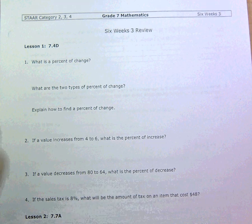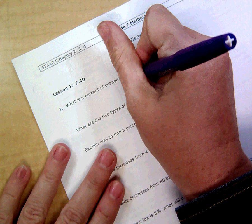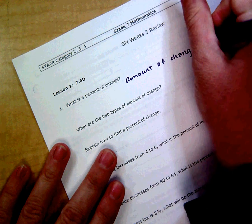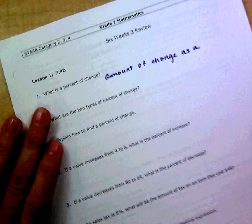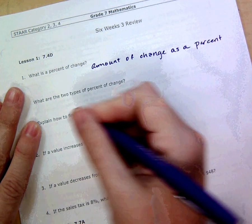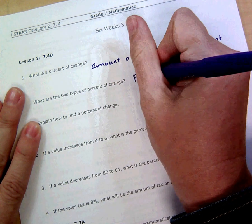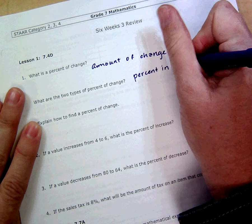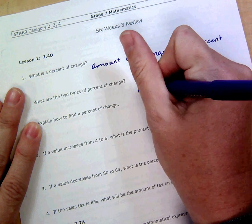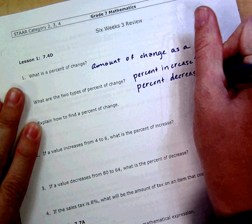Going back to question number one: the percent of change is the amount of change as a percent, very simple. The two types of percent of change are percent increase - remember that's when it goes up - and the other one is percent decrease, decreasing is going down.